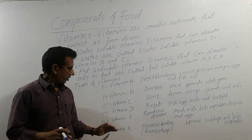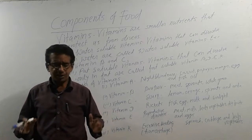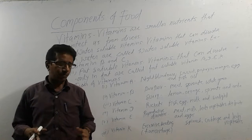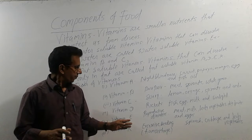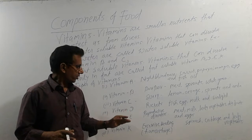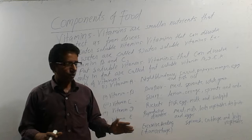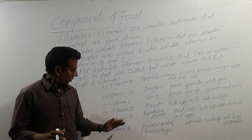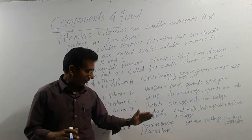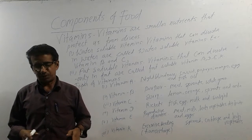The last one is vitamin K. The disease that can be caused by the deficiency of vitamin K is excessive bleeding, and this disease is called hemorrhage. The sources for vitamin K are spinach, cabbage, and all leafy vegetables.